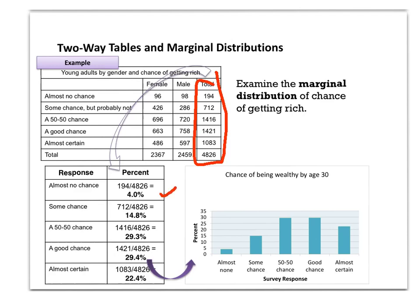There were 712 who felt they had some chance but probably not, out of that same total of 4,126, so 14.8 percent. Likewise for each category: 50-50 chance was 29.3 percent, a good chance 29.4 percent, and almost certain is 22.4 percent. That data is then translated into a bar graph to show the percentages of that particular total.